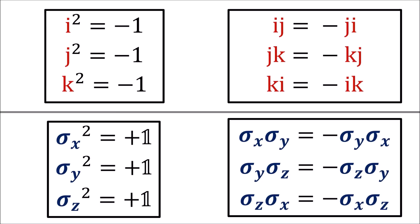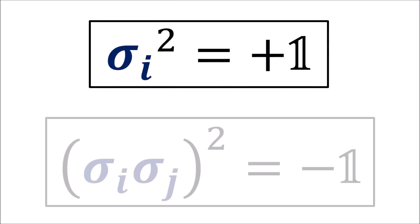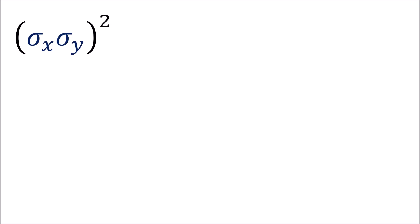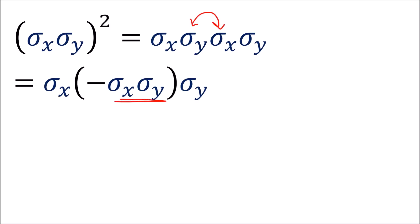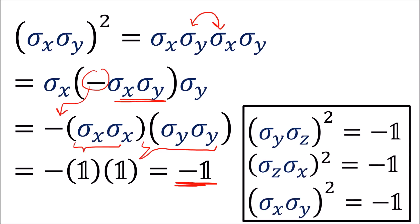So the sigma matrices look a bit like the quaternion imaginary units — they anti-commute just like i, j, k, but they square to positive 1 instead of squaring to negative 1. Here's the key to linking the sigmas with i, j, k: a single sigma matrix will square to plus 1, but a pair of different sigma matrices will square to negative 1. For example, if we take sigma x times sigma y and square it, we get sigma x, y, x, y. If we flip the middle two sigmas, we pick up a negative sign. We're left with sigma x squared and sigma y squared, which both go to the identity matrix. So we end up with the negative of the identity matrix. We can use a similar proof to show that any pair of different sigmas squares to the negative identity matrix.